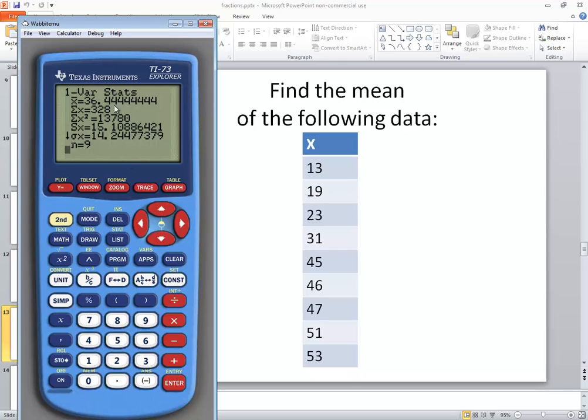Now notice it says X bar is 36.44. That's our answer. Now remember X bar is your sample mean, and Mu would be your population mean, and both of those are the same formula.